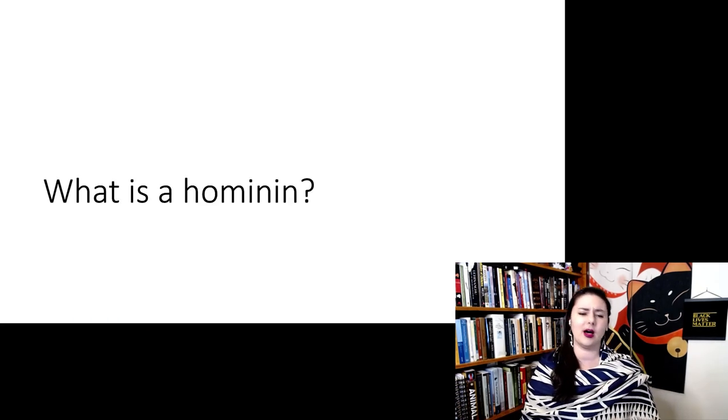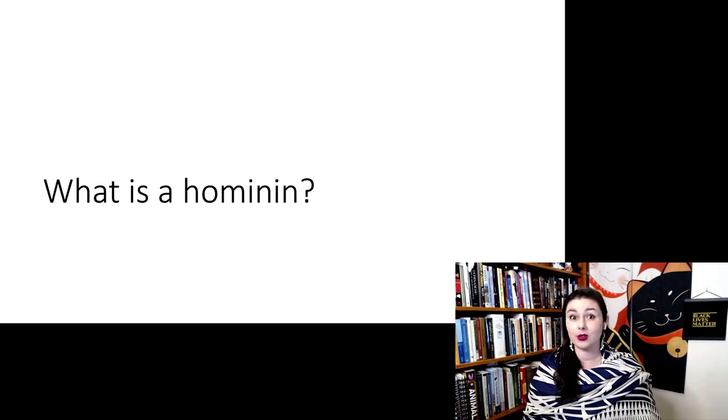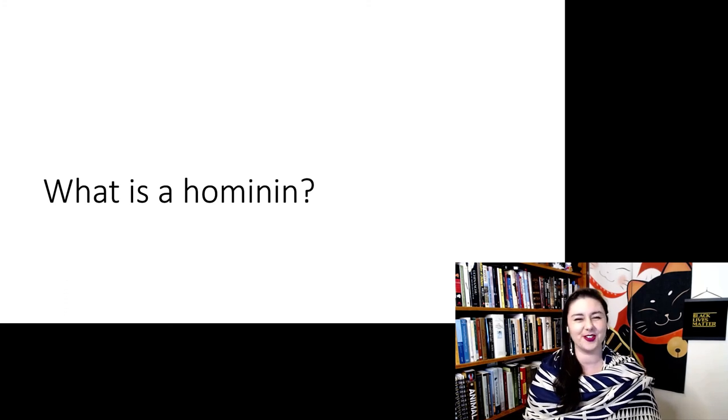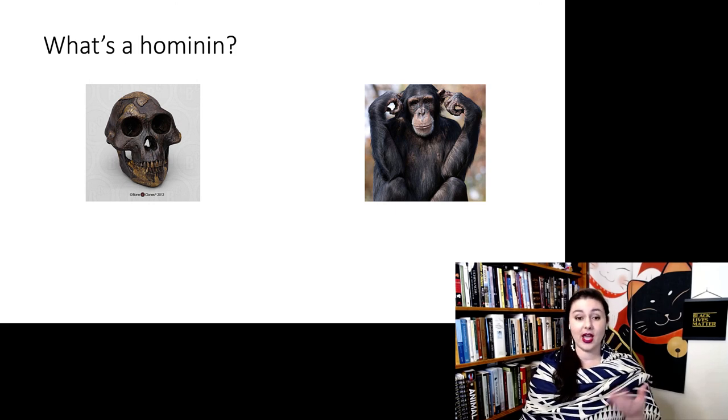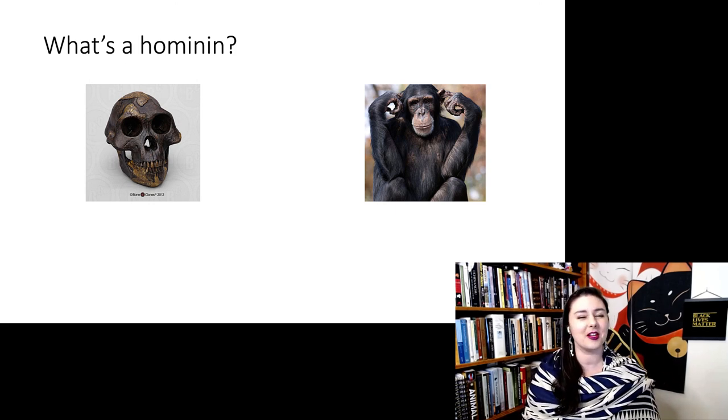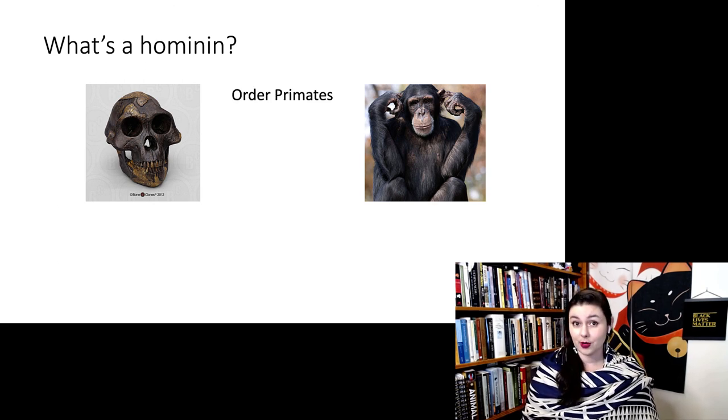But next, let's talk about hominin. A hominin is a really important term that you're going to hear a lot if you're learning about human evolution. So let's think about our taxonomy again. So we have this australopith and then of course a chimpanzee. An australopith is one of our ancestors. So all of us are in order primates, suborder haplorhini, infraorder simiiformes, family hominidae, and subfamily homininae.